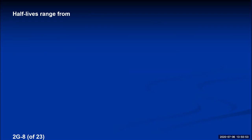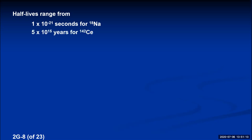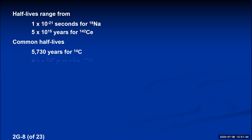Half-lives range from extremely small to extremely large values. The shortest known half-life is sodium-18 at 1 × 10⁻²¹ seconds — a very unstable nucleus. Cerium-142 has a half-life of 5 × 10¹⁵ years, so long it's almost as if it's not radioactive. Two common ones: carbon-14 has a half-life of 5,730 years, and uranium-238 has a half-life of 4.5 × 10⁹ years.